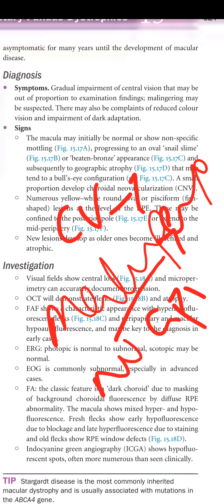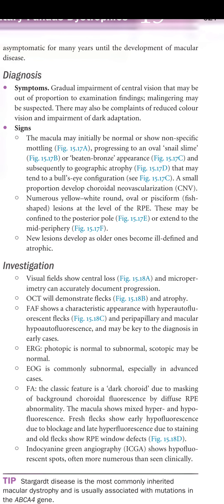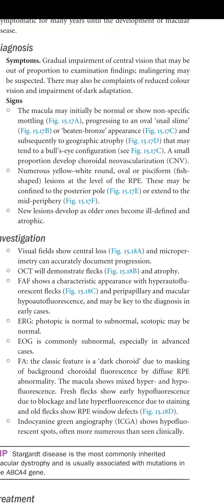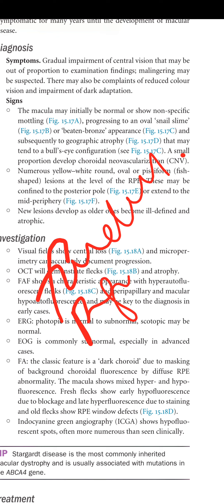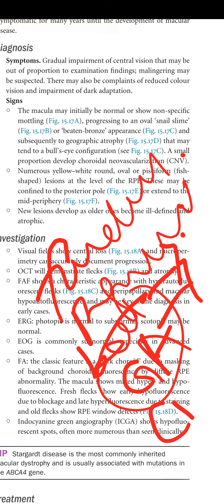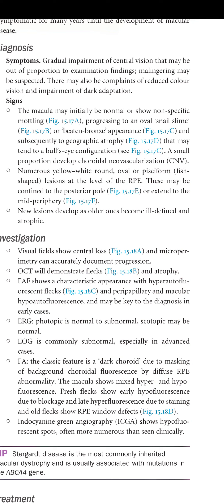Signs include: the macula may be initially normal or may show non-specific mottling, progressing to an oval snail's slime or beaten bronze appearance, and subsequently to geographic atrophy that may take on a bull's eye configuration. A small proportion develop choroidal neovascularization. Numerous white-yellow, round, oval, or pisciform (fish-shaped) fleck lesions appear at the level of the RPE, confined to the posterior pole or extending to the mid-periphery.